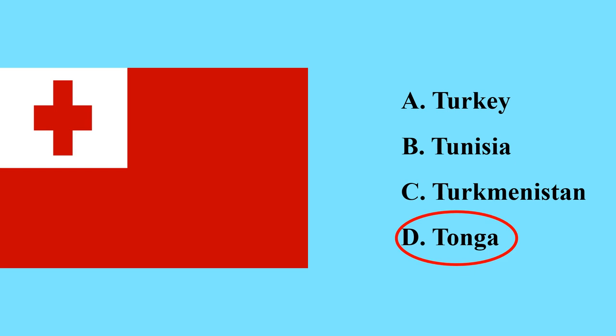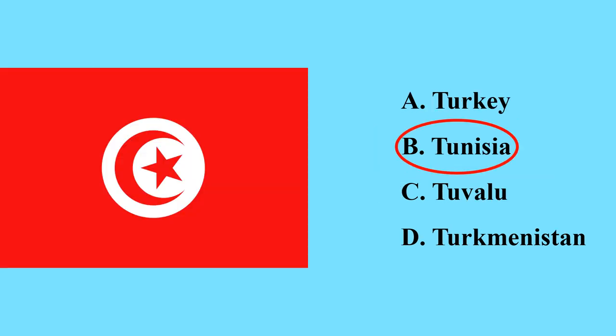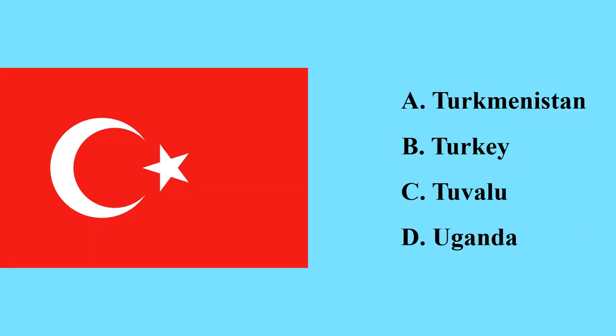This is the flag of Tonga, a country in Oceania. This is the flag of another country in North America called Trinidad and Tobago. This is the flag of Tunisia, a country in North Africa. This is the flag of Turkey — Turkey is also a transcontinental country that belongs to both Europe and Asia.